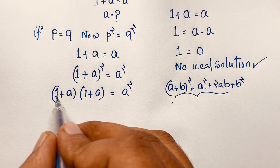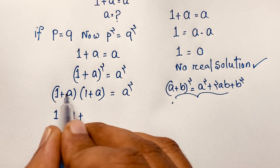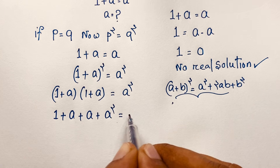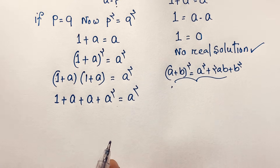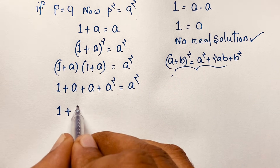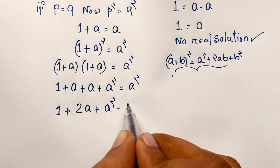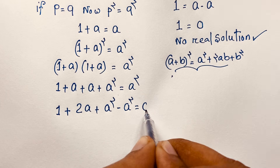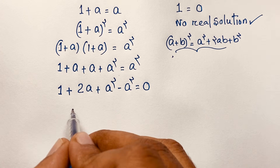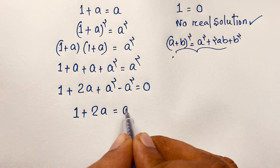Expanding: 1 times 1 is 1, plus 1 times a is a, plus 1 times a is a, plus a times a is a². So we get 1 plus 2a plus a² equal to a². Moving the a² to the other side, the a² terms cancel, and we find 1 plus 2a is equal to 0.